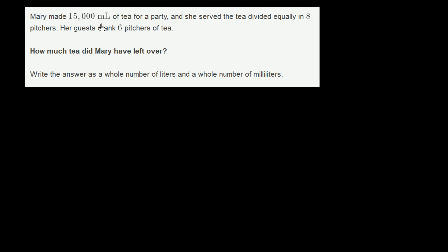Mary made 15,000 milliliters of tea for a party, and she served the tea divided equally in eight pitchers. Her guests drank six pitchers of tea. How much tea did Mary have left over? Right, the answer is a whole number of liters and a whole number of milliliters.